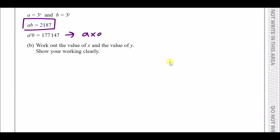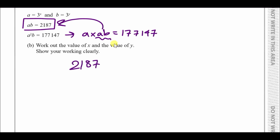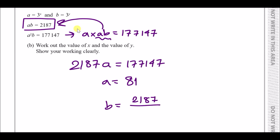Since a squared b is the same as a times (a times b), we can substitute a times b with 2187. So we get a times 2187 equals the right-hand side, then divide to find a equals 81. Then from a times b equals 2187, b equals 2187 divided by 81, which gives b equals 27.